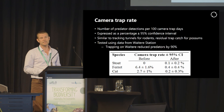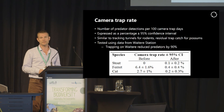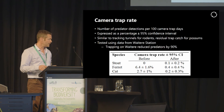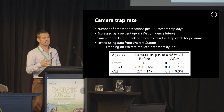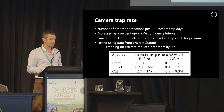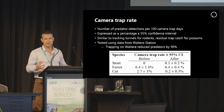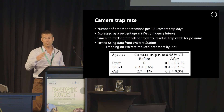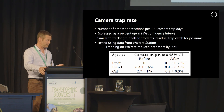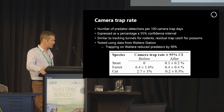Based on that, the suggestion is that the compliance threshold should be that after control the camera trap rate should be less than 1%. But as Mark said, that can be updated as we gain more knowledge — we might decide that's too high or too low and it might be adjusted accordingly.